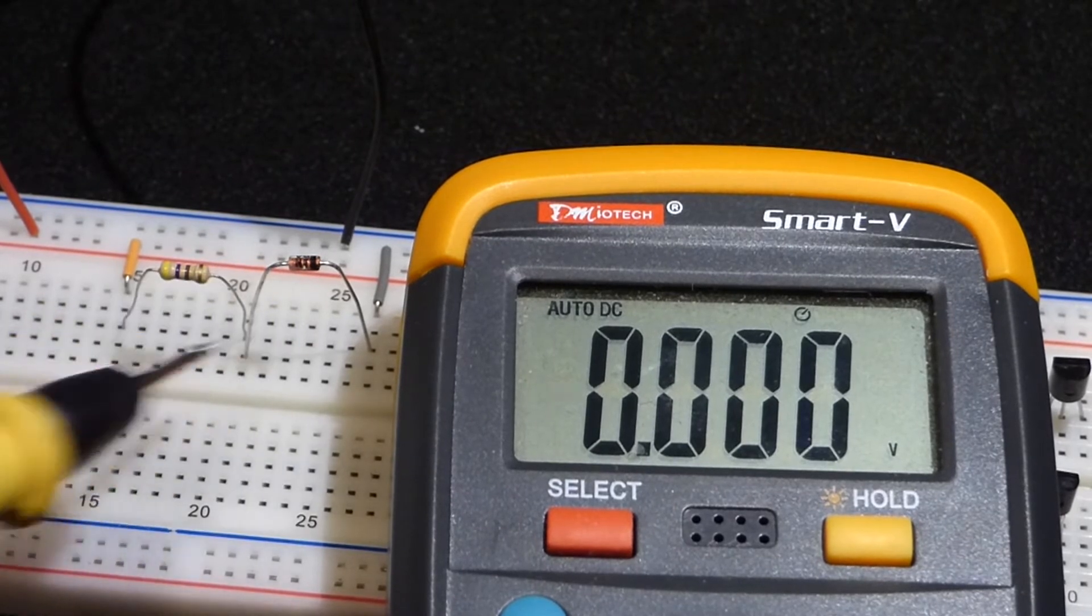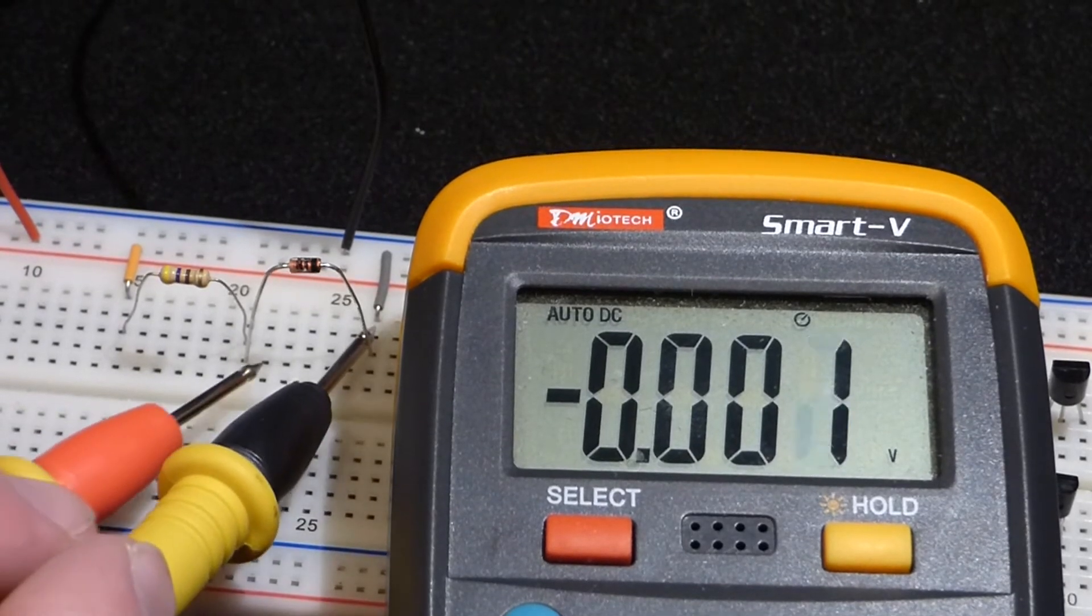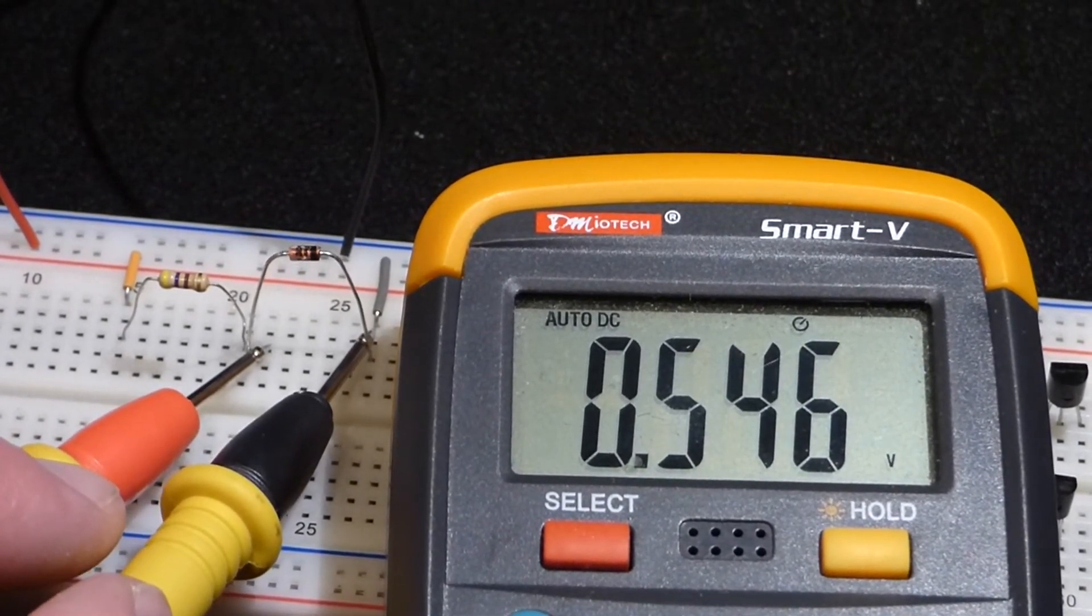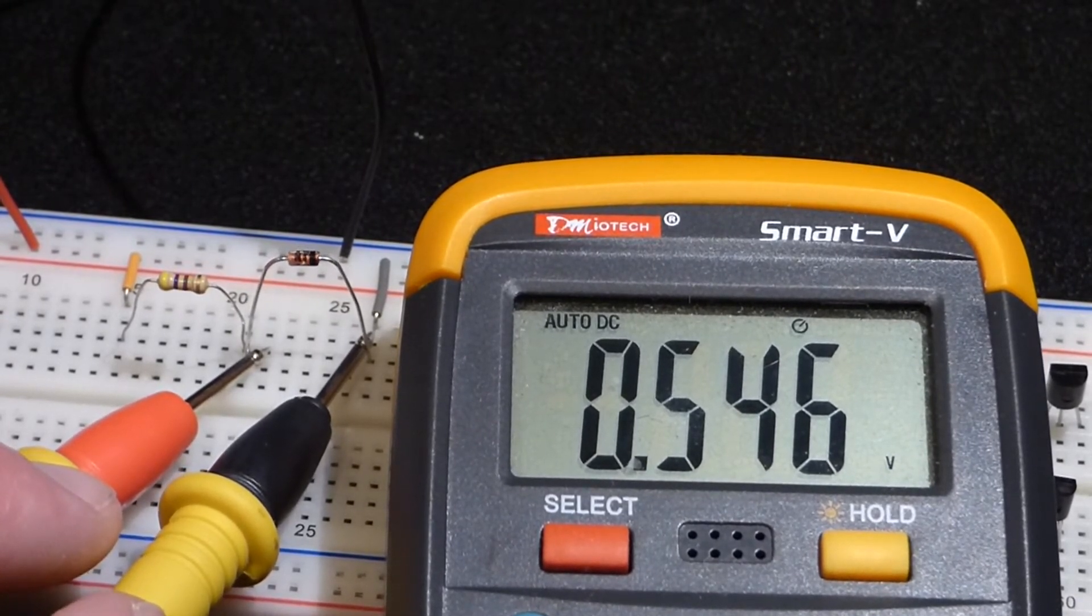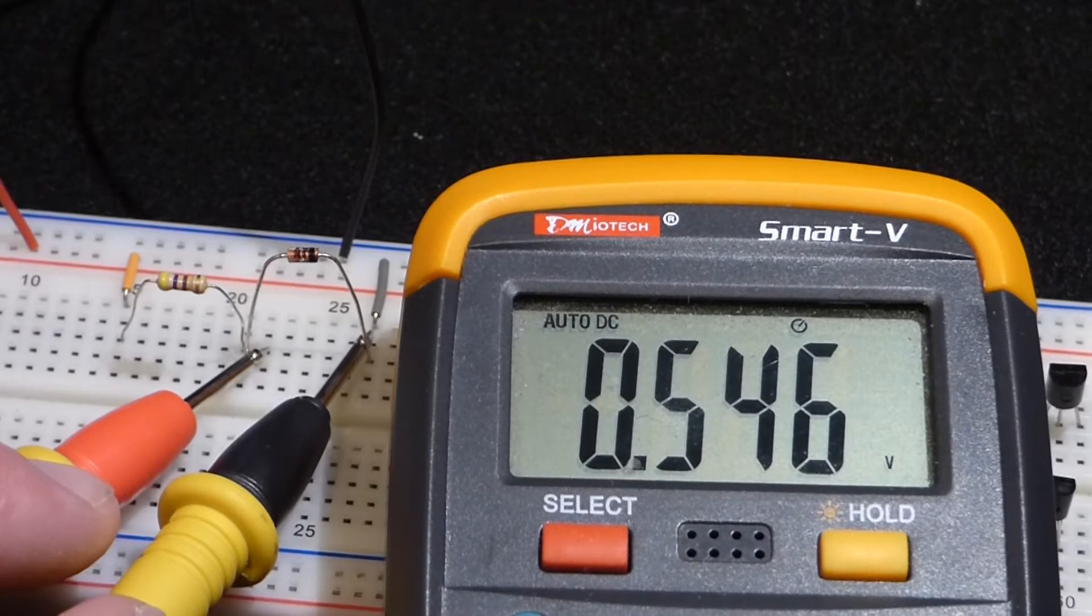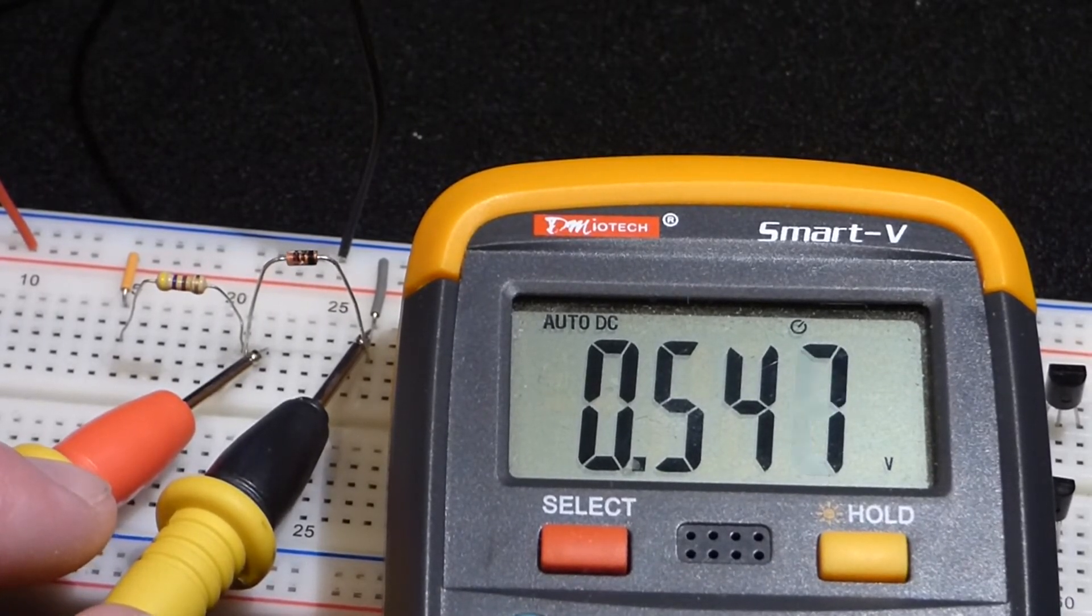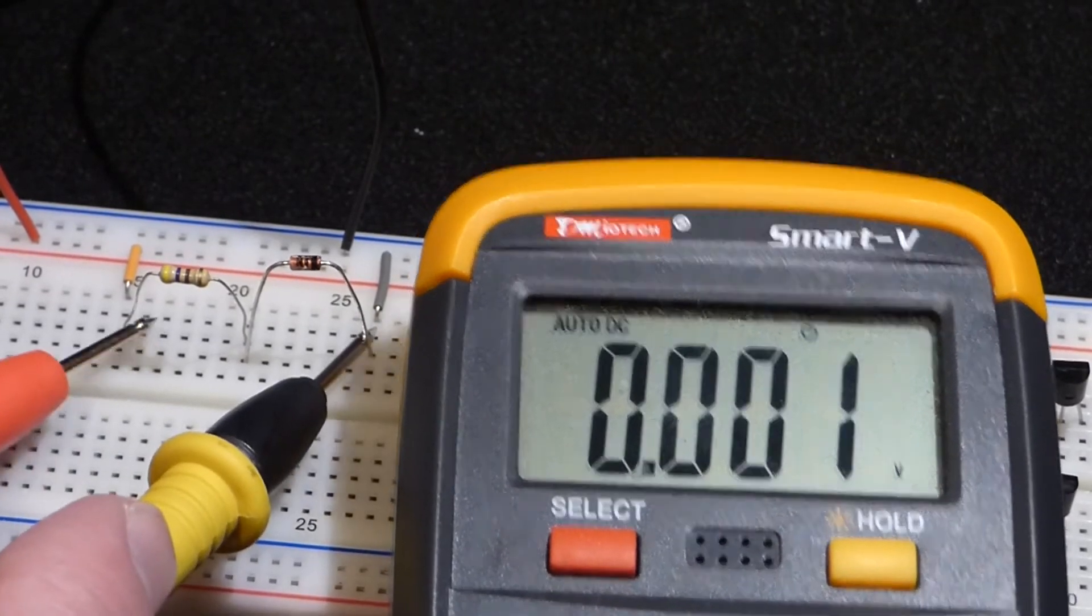So now I put the Schottky diode back in the circuit, but removed the LED. So now there's going to be more current going through the Schottky diode. And here you can see that with the more current going through there, it's actually blocking more voltage. Almost 0.5 more volts than it was before. And I don't want that. I want it to block as little voltage as possible.